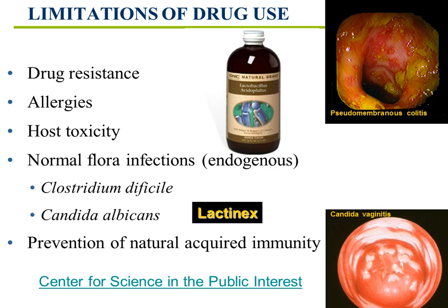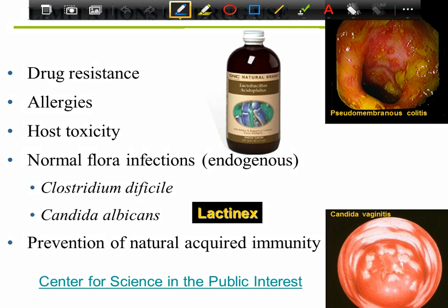The last topic: problems and limitations. Drug resistance we've covered. Allergies will be discussed more in the immune system chapter. Let me highlight prevention of naturally acquired immunity: when your immune system sees an organism and responds to it, that response lasts years — sometimes a lifetime. If you deprive your immune system of identifying and responding to the microorganism causing your infection by treating it with antibiotics, you are at a disadvantage. Your immune system is better than any antibiotic.